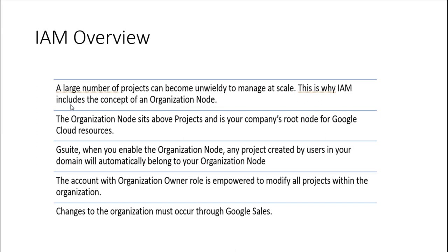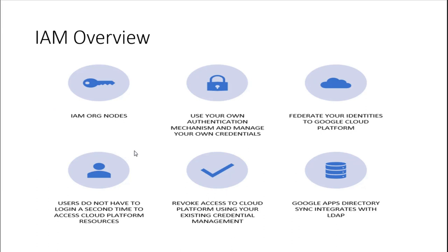A large number of projects can become unwieldy to manage, which is why we want to have an org node if we're running G Suite or Cloud Identity. With org nodes, we have the ability to use our own authentication — if we already have a KMS setup, we continue using it. We can also federate identities to GCP using tools like Okta, set controls on login attempts, and revoke access when someone leaves a company, managing the resources they were using as part of a lifecycle.